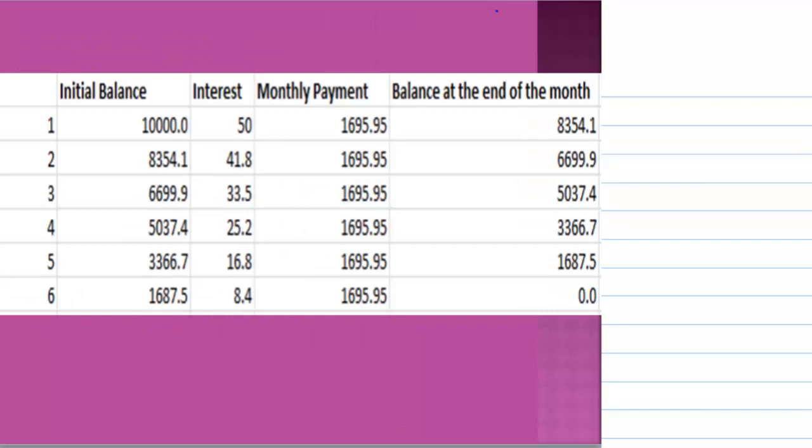You can verify that this calculation is correct. For example, at the end of the first month, initially you have $10,000 plus the interest minus the monthly payment. At the end, the balance is $8,354.10. Repeat this calculation, you will find that at the end of the sixth month, the loan is paid off.